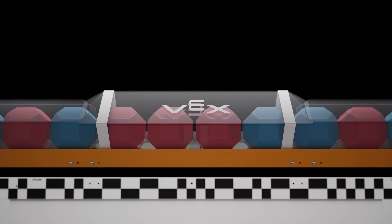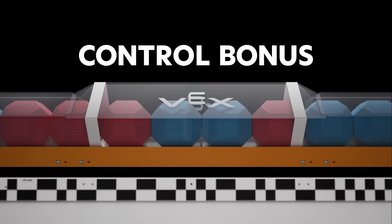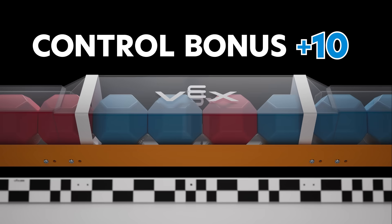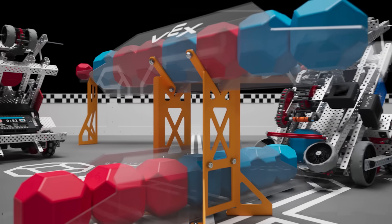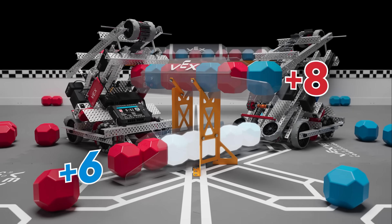The alliance with the most blocks in the center section of each long goal will receive a control bonus worth 10 points, but that's not all. Additional control bonuses will also be awarded to the alliance that fills the majority of the upper or lower center goals.